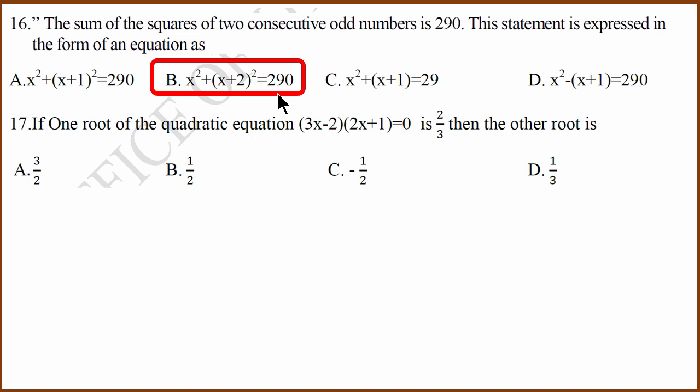The 17th one, they've given one of the roots is 2 by 3. What is the other root? We take the question and write it down like this: 3x minus 2, 2x plus 1 equals 0, which means 3x minus 2 equals 0, x equals 2 by 3, but that root has already been given. The other option is 2x plus 1 equals 0, which means x equals minus 1 by 2. The correct answer is C.